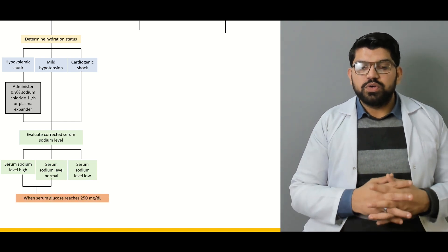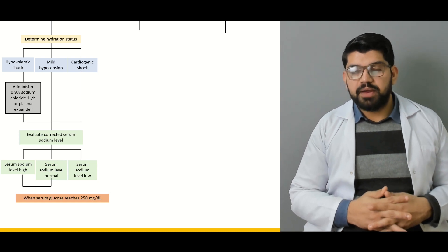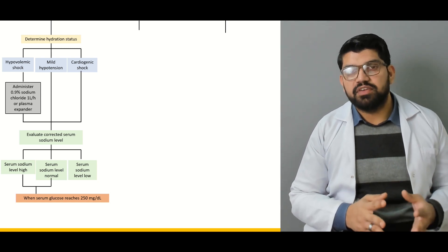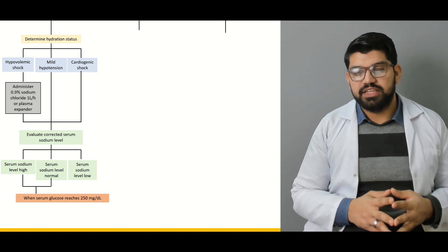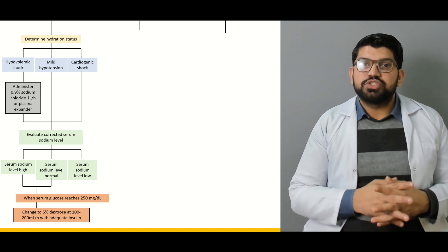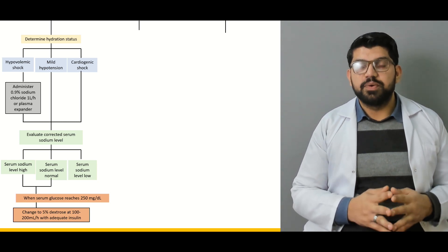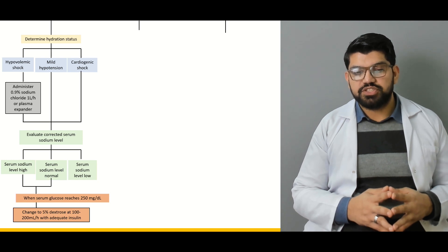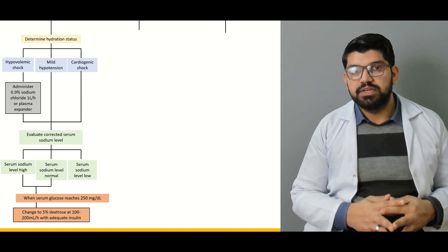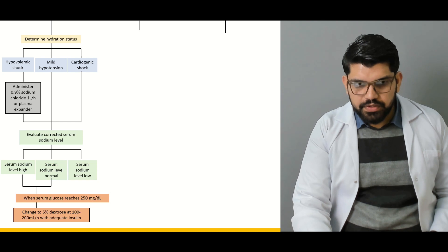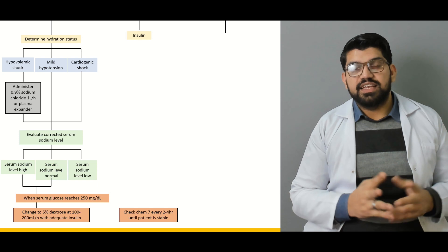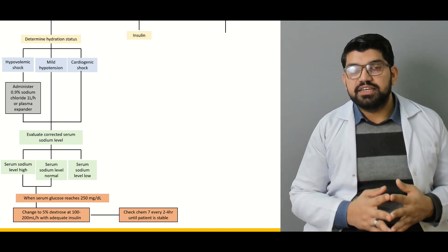When glucose reaches 250 mg/dL, the patient should transition to a maintenance fluid dose. When blood sugar is less than 250 mg/dL, change the fluid from normal saline to 5% dextrose with adequate insulin, given at 100 to 200 mL per hour. Check blood sugars and electrolytes (CHEM7) every 2 to 4 hours until the patient is stable.